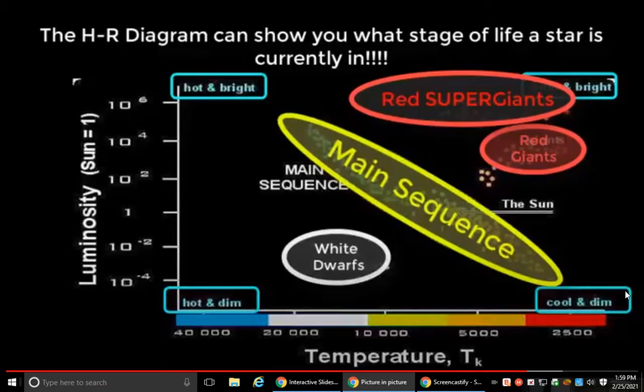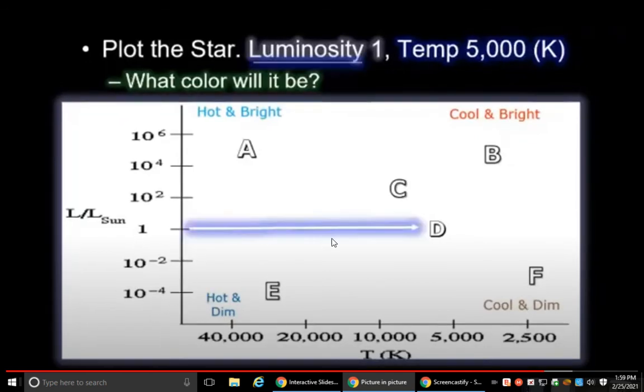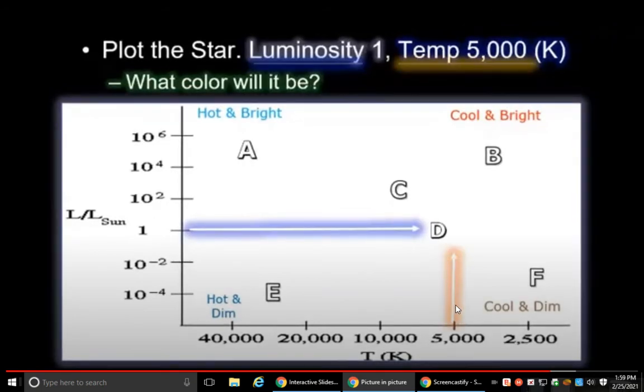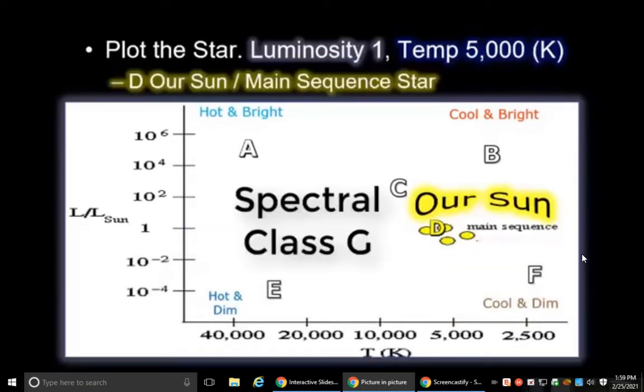Hopefully this has clicked in your brain, and we will now practice identifying stars using your newfound knowledge. Plot this star with a luminosity of 1 and a temperature of 5000 Kelvin. Here's the luminosity of 1, and here's the temperature of 5000 Kelvin. Did you get star D? It should be yellow, which is spectral class G. That's actually our sun.